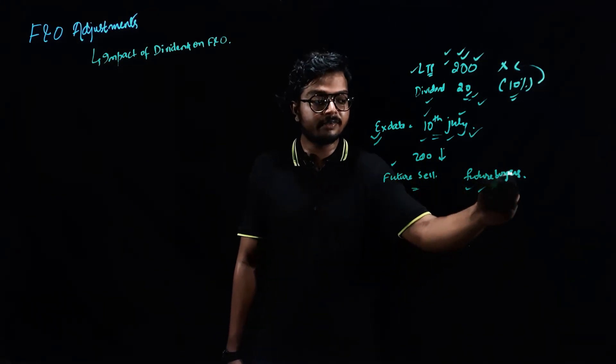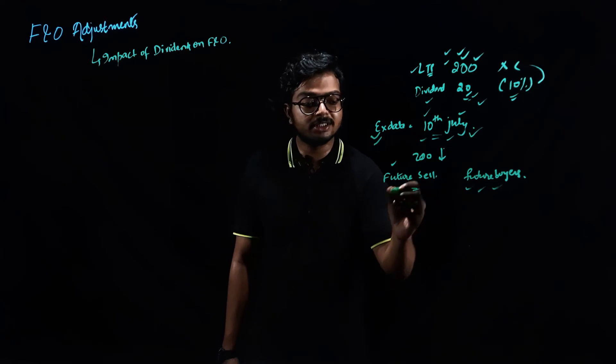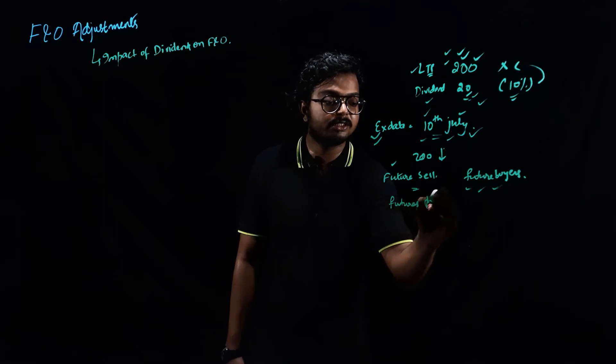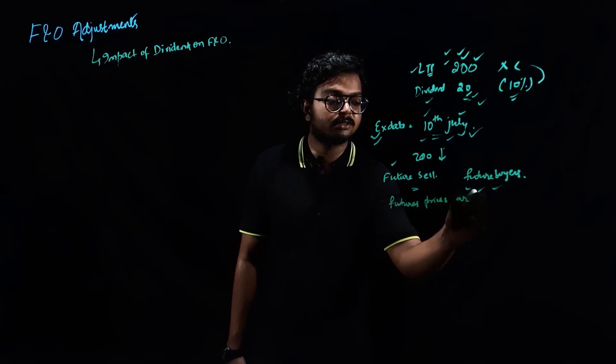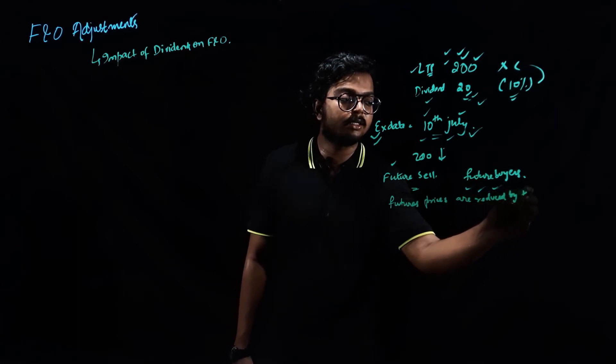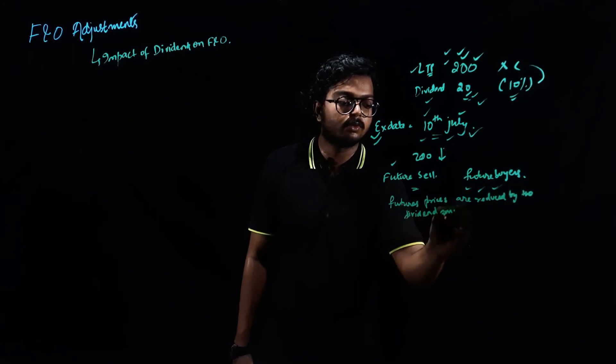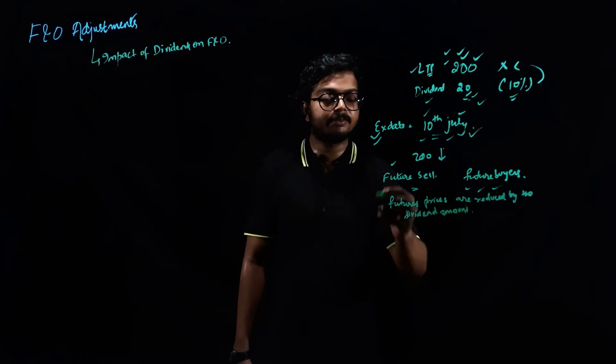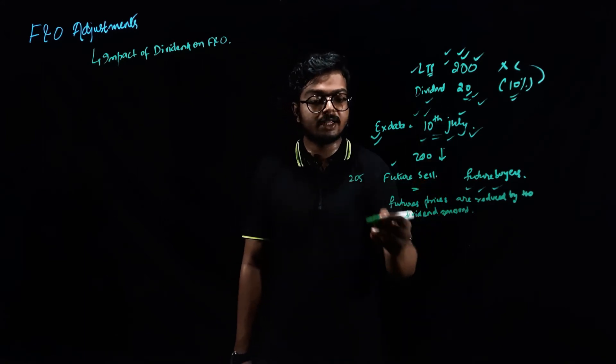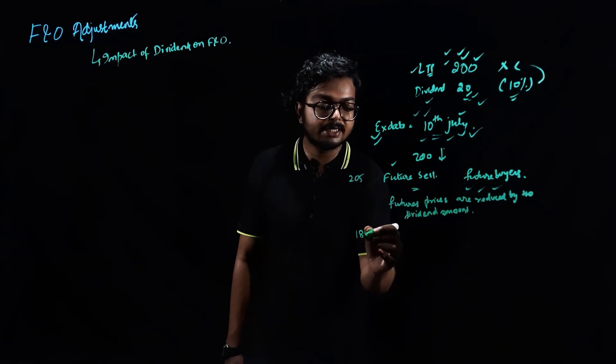So in this case, to eliminate this risk to the future buyers, what the exchange does is that it reduces the futures price. So futures price, remember this, this is very important. Futures prices are reduced by the dividend amount. Say for example, the futures price was assumed at 205. Then on this date, 10th of July, the futures price would be reduced by 20 rupees. It would become 185.